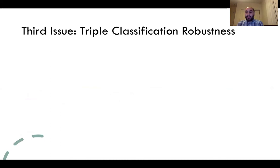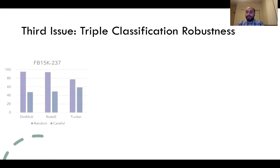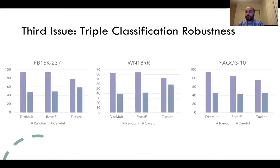Finally, the triple classification task is not robust to different negative sampling approaches. As we can see in these figures, the performance dropped dramatically upon using more challenging negative sampling.